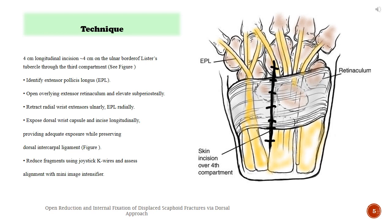Identify extensor pollicis longus (EPL). Open overlying extensor retinaculum and elevate subperiosteally. Retract radial wrist extensors ulnarly and EPL radially. Expose dorsal wrist capsule and incise longitudinally.